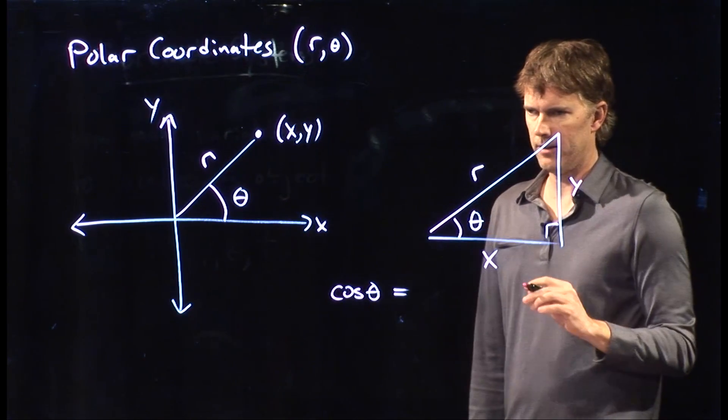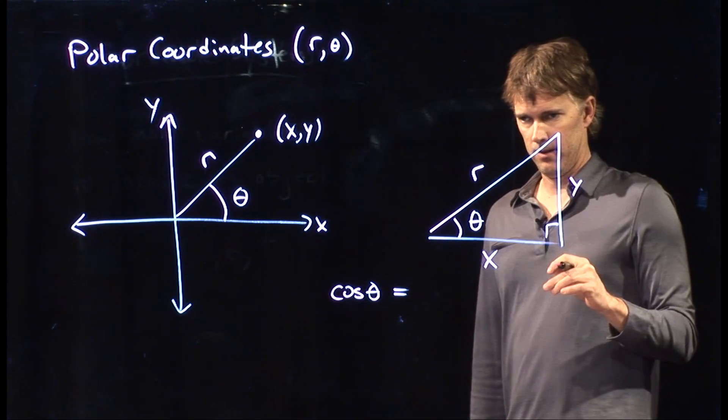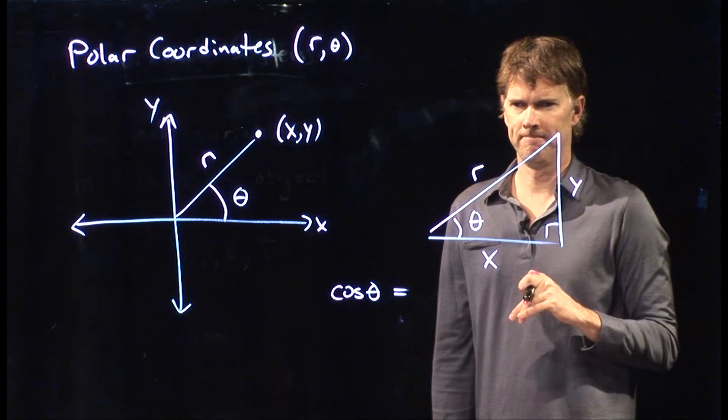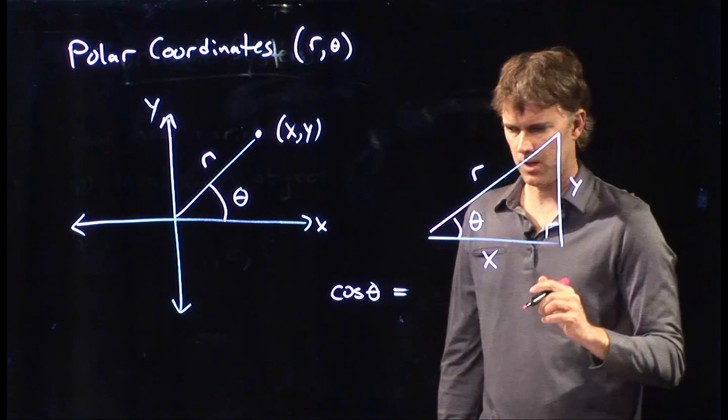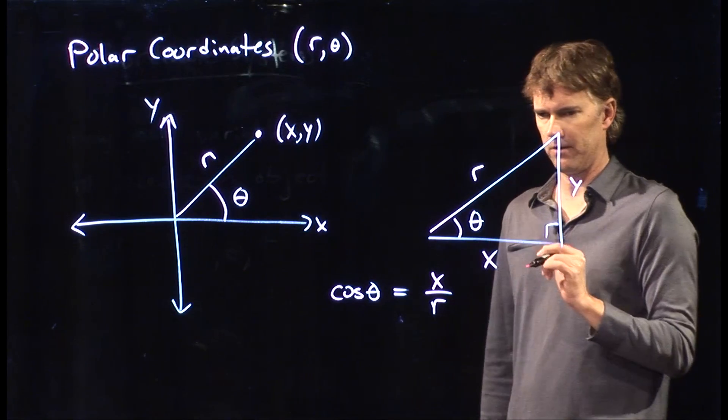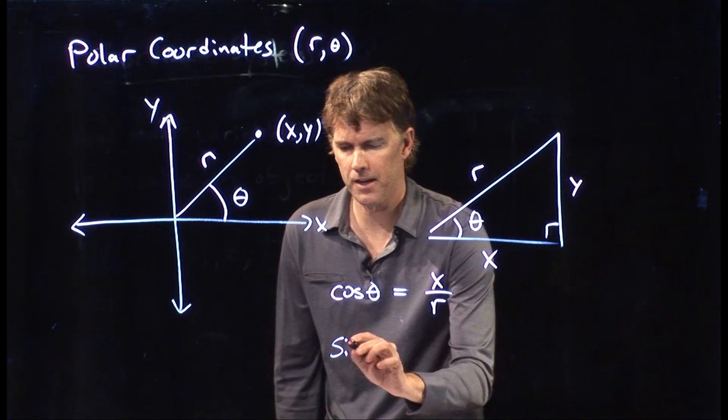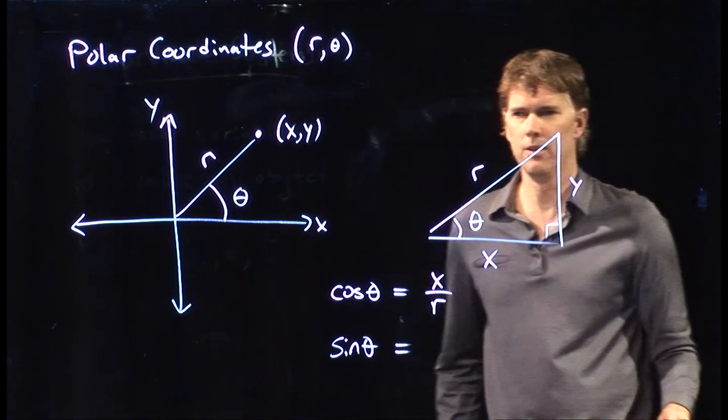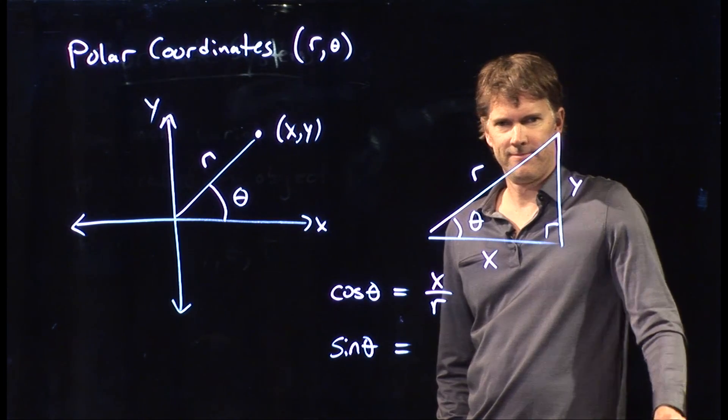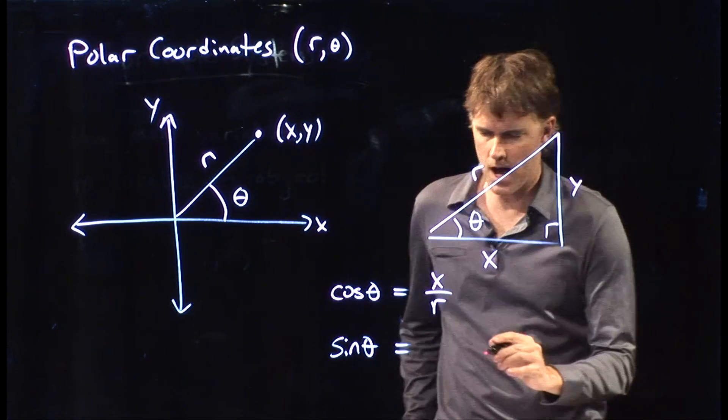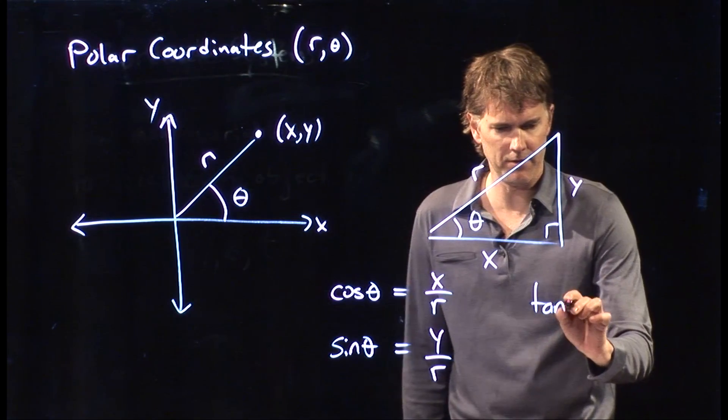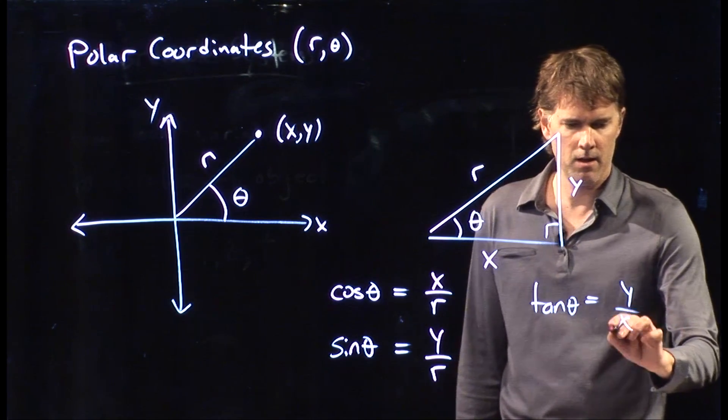Good old SOH CAH TOA, right? What is the cosine of theta? Cosine theta equals x over r, right? Cosine is adjacent over hypotenuse. What about sine of theta? Y over r. Y over r. Absolutely. And then finally, tangent of theta is going to be y over x.